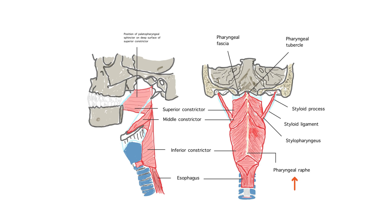To recap, in the external layer there are three muscles — superior constrictor, middle constrictor, and inferior constrictor — whose muscle fibers run in a circular direction. In the internal layer, there are three muscles — stylopharyngeus, salpingopharyngeus, and palatopharyngeus — whose muscle fibers run in a longitudinal direction.